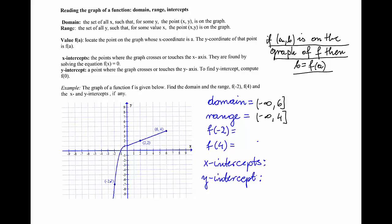So what remains is to find the point on the graph that has x-coordinate negative 2. Here is x = −2; if I follow to the graph I will find the point (−2, −7).